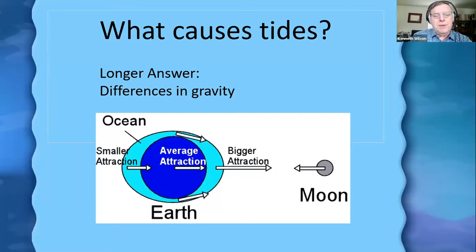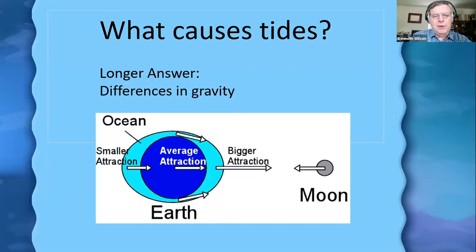To illustrate this, I have a very simple diagram here. Here we have a cartoonish diagram of the Earth and the Moon as seen from above, as if you were in space right above the Earth's North Pole looking back down. This is not completely to scale — in the real world, the Moon would be a quarter of a million miles to the right of the Earth. So we brought the Moon in closer here, and we've also exaggerated the tides so you can see what's going on.